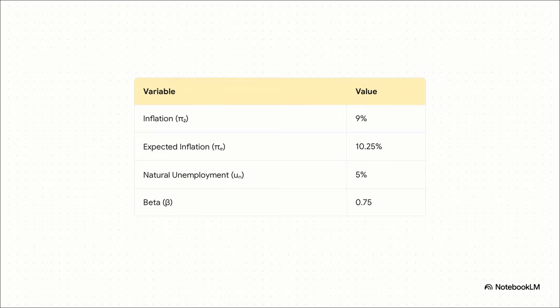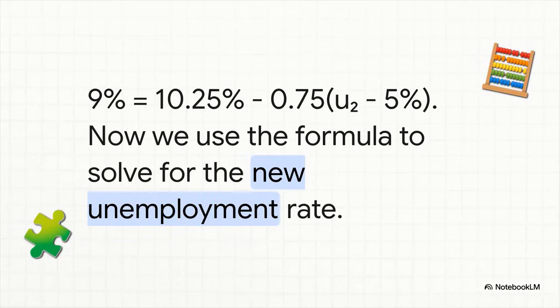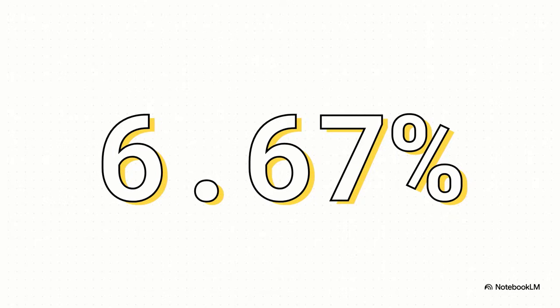For now, we'll assume our recipe, our beta, is still the same. We're using the exact same formula, but this time we're trying to find a different missing piece of the puzzle, the new unemployment rate. So we plug in our new 9% inflation, our new expectation of 10.25%, and our good old beta, 0.75. And the answer we get is 6.67%.